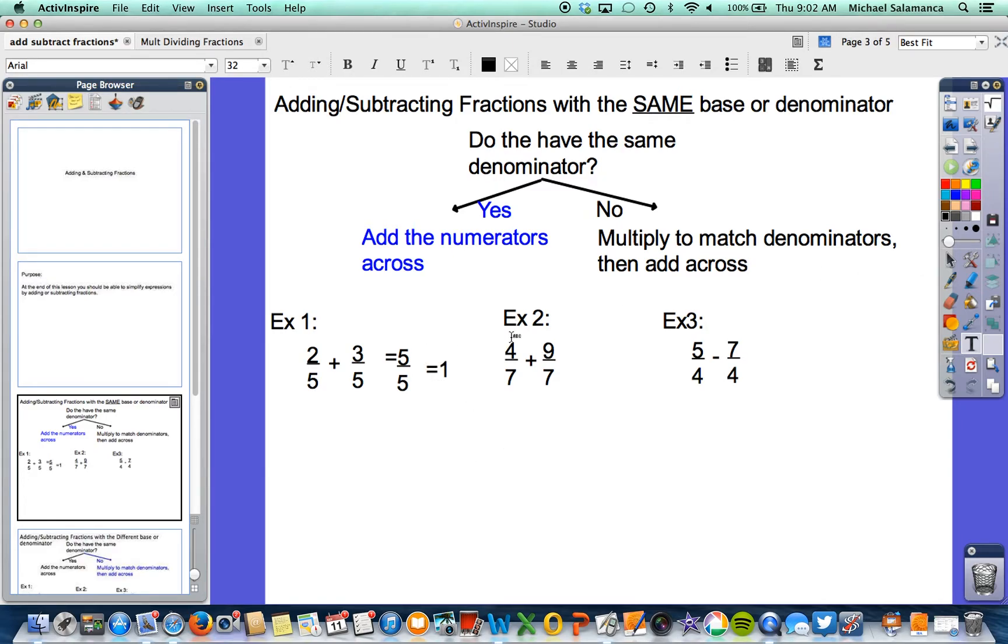Number 2 is 4 sevenths plus 9 sevenths. Again, same denominator, so we are going to add those numerators across, and you are left with 13 sevenths. Now, I realize that it is an improper fraction, but I would like for you to leave it in that fashion, because it's going to help us a lot more later on.